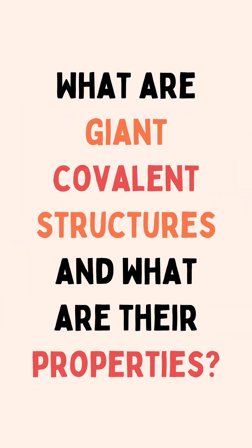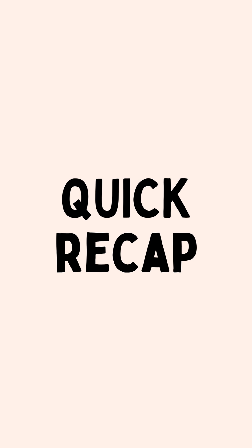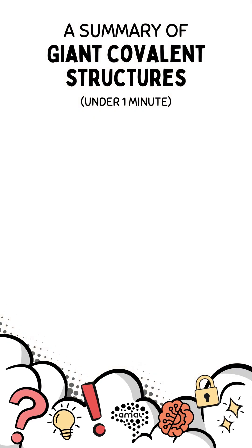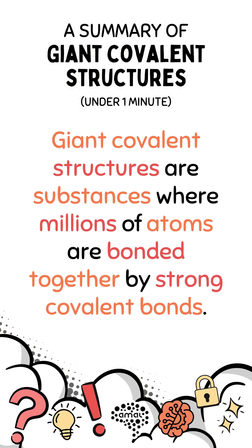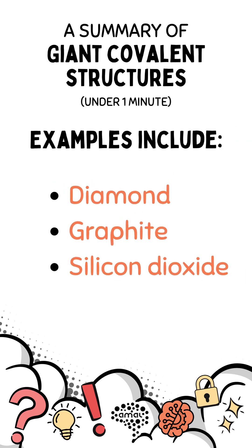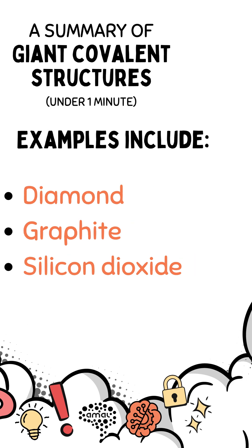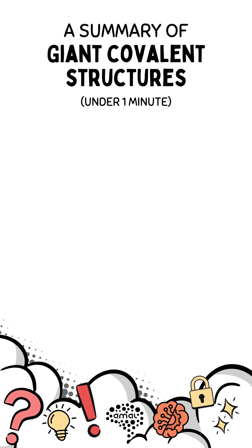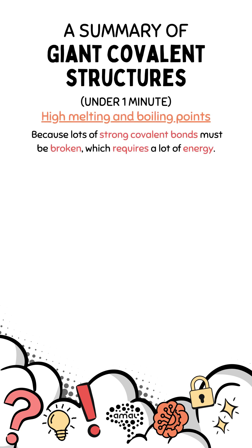Grade 9 Alert: What are giant covalent structures and what are their properties? Giant covalent structures are substances where millions of atoms are bonded together by strong covalent bonds. Examples include diamond, graphite, and silicon dioxide. Properties of giant covalent structures: they have high melting and boiling points because lots of strong covalent bonds must be broken, which requires a lot of energy.